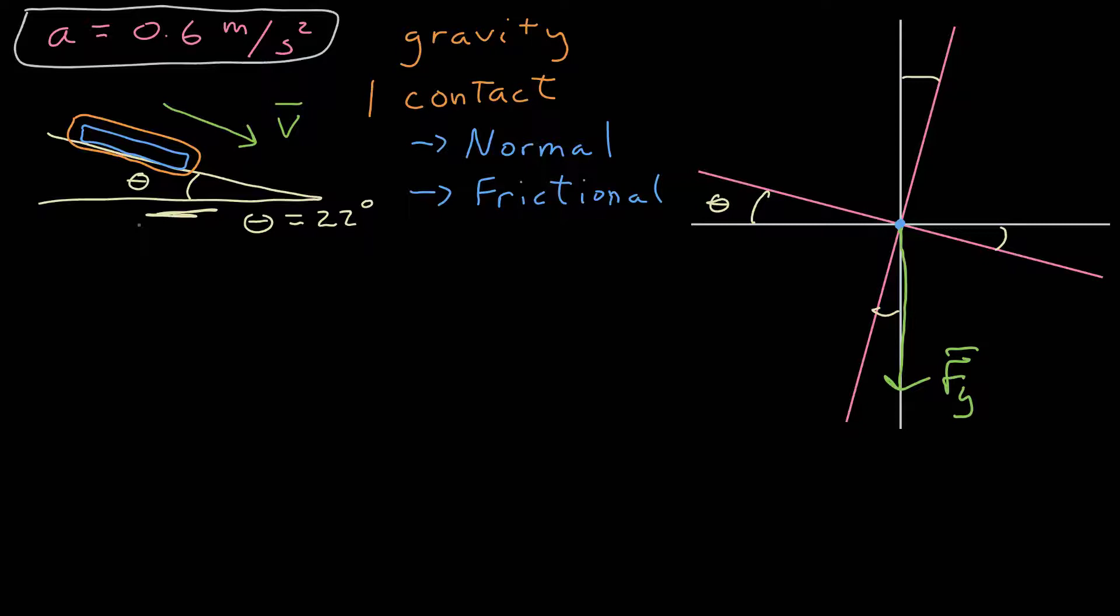The force due to gravity points towards the center of the earth, which is down. The normal force points up, perpendicular to the incline. And the frictional force points up the incline as the object is sliding down.